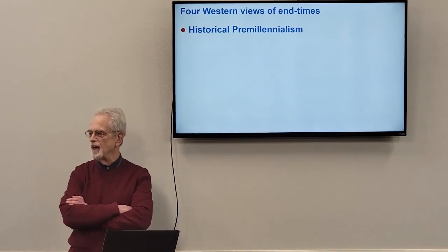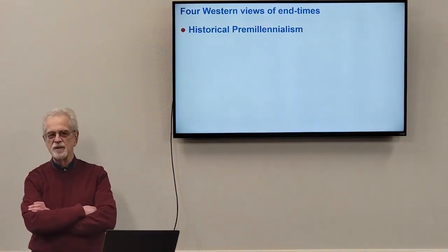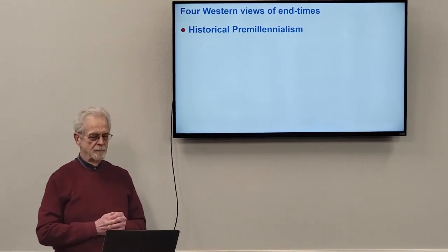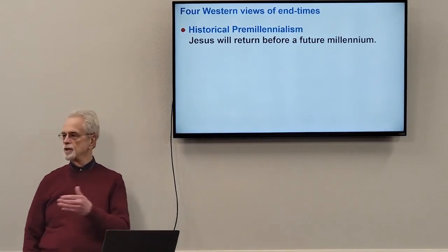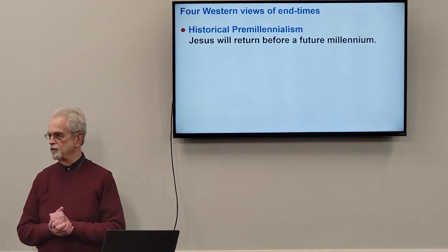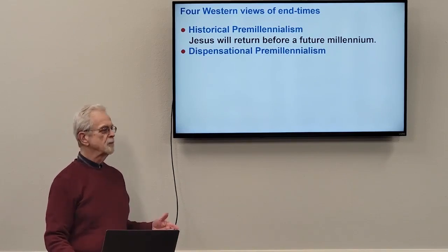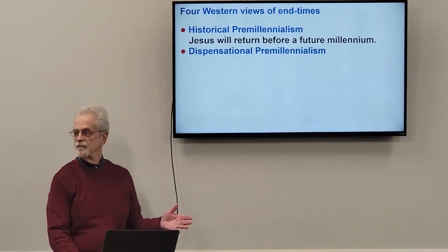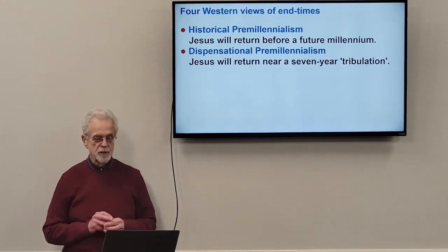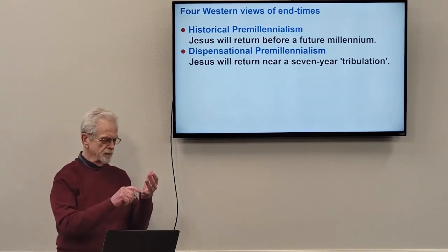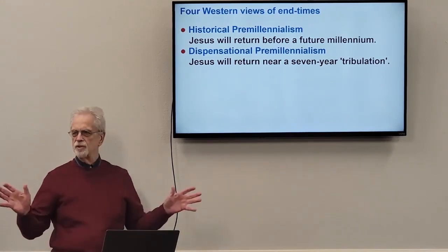There are four Western views of the end times — most of the rest of the world doesn't think about these things. Euro-American theology has wrestled with these ideas. One is historical pre-millennialism: the idea that Jesus will return before some future millennium. It's called historical because it will happen in history and because this is what most Christians held historically. Then there is dispensational pre-millennialism, an English-world invention of about a century and a half ago — the doctrine that Jesus will return sometime around a future seven-year tribulation period. Dispensationalists are not too sure whether Jesus comes before, in the middle of, or following the tribulation.